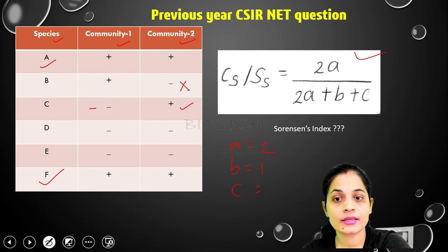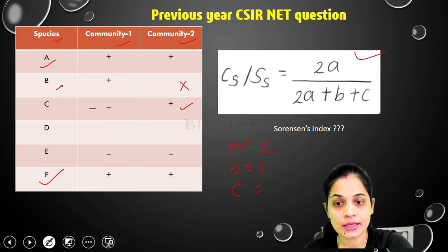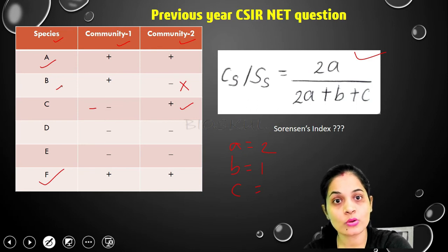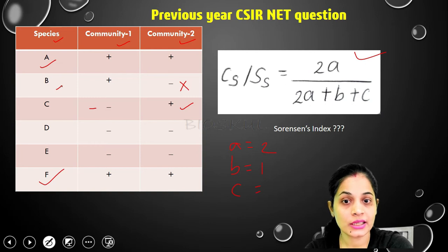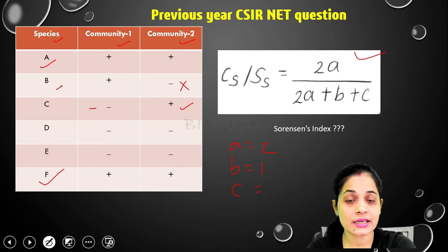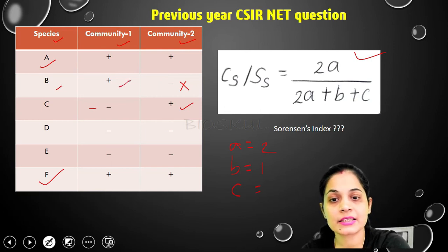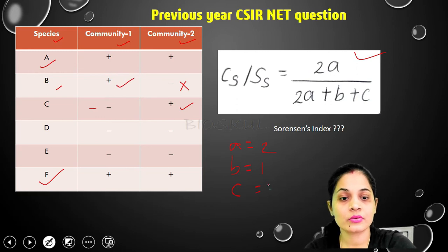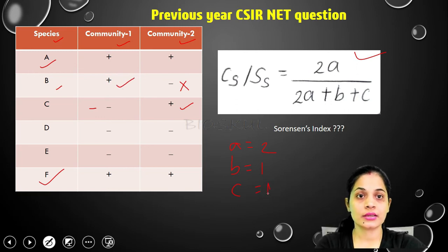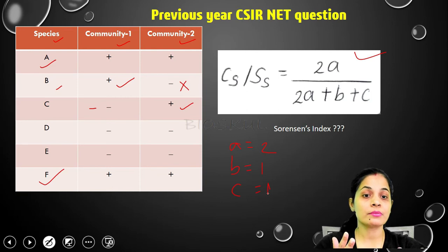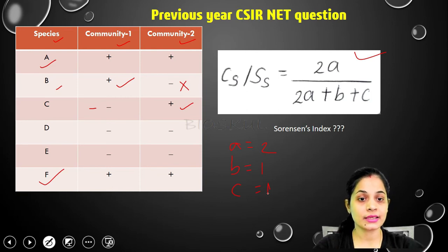For 'c' — absent in community 2 but present in community 1 — species B is present in community 1 but absent in community 2. Species D and species E are absent in community 2 but also absent in community 1, so they count toward d. Therefore, only species B qualifies, making c equal to 1. So now we have a = 2, b = 1, c = 1.